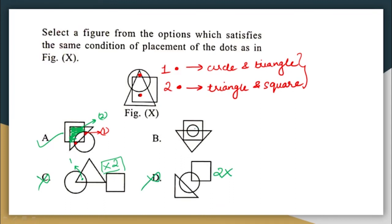Looking at option B: the first dot has to be placed in a region common only to the circle and triangle but not the square. However, the circle itself is inside the square, so anywhere I place a dot within the circle it will also be inside the square — this condition cannot be satisfied. So option B is also wrong. The correct answer is option A.